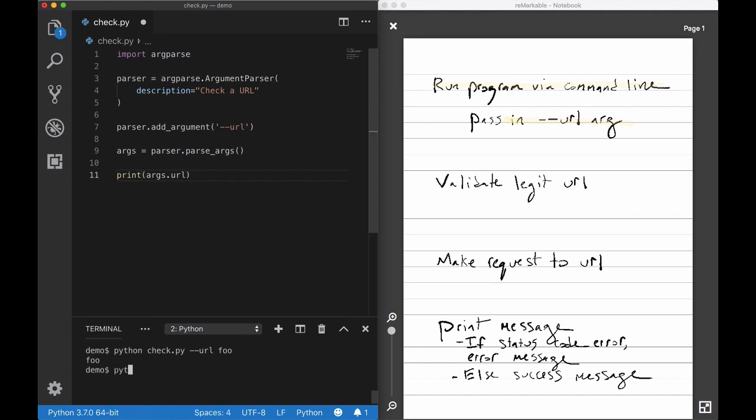But I just realized something. Right now our program isn't requiring a URL argument. You see when I run it without the URL passed in, it just prints out none because we didn't pass anything. So I'm going to hop back over to the outline and write required next to that URL argument.